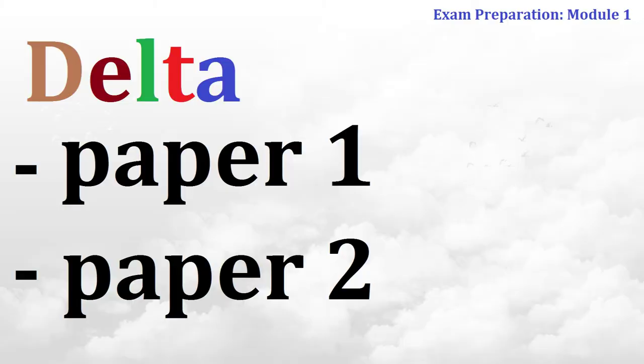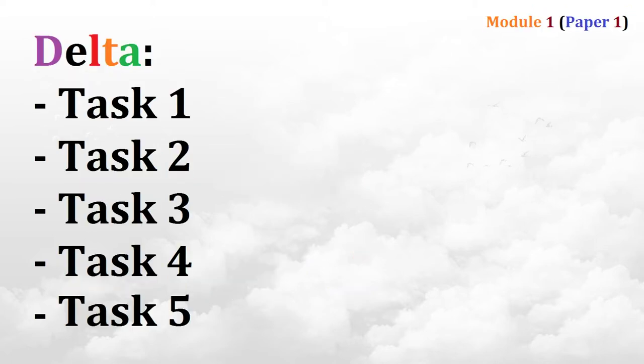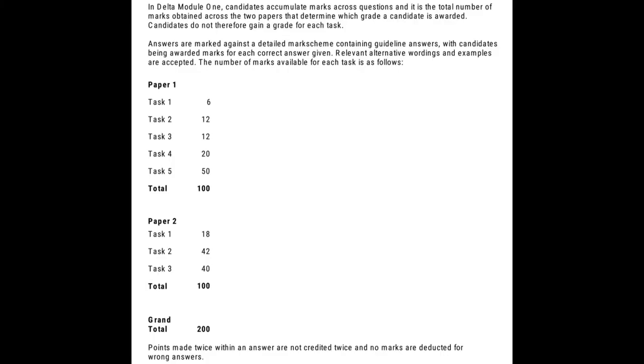Today I'd like to talk about the Delta Module 1. As you probably know, there are two parts — they are known as papers — in the Delta Module 1 examination, and each paper is represented by a different set of tasks. Today we'll be doing Paper 1. This paper consists of five different tasks, and in this video I'm going to cover two of these five tasks, starting with task number four. By the way, here is the table with marks available for each task — you can check this out later.